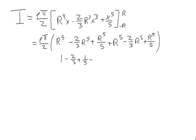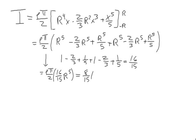1 minus 2 thirds plus 1 fifth plus 1 minus 2 thirds plus 1 fifth equals 16 fifteenths. Now you have rho pi over 2 times 16 fifteenths r to the fifth, which is 8 over 15 rho pi r to the fifth.